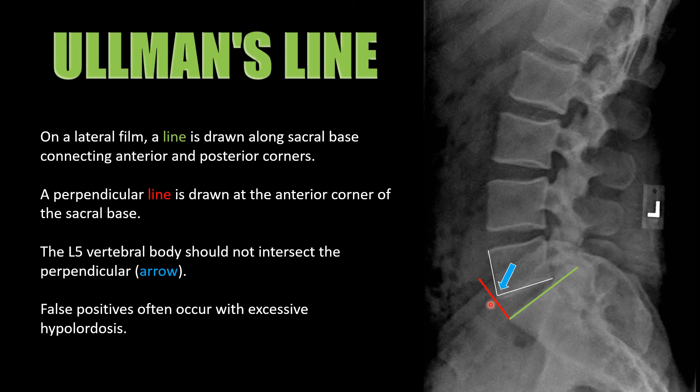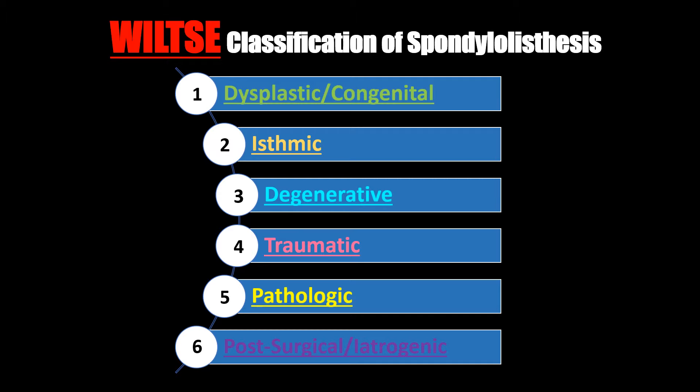There are a number of different reasons why a spondylolisthesis would be present. The Wiltse classification system breaks it down into: dysplastic, isthmic, degenerative, traumatic, pathologic, and post-surgical or iatrogenic.